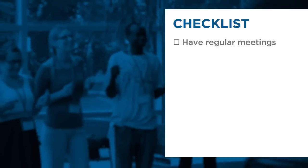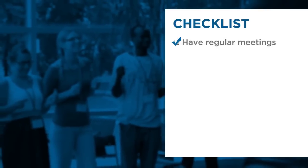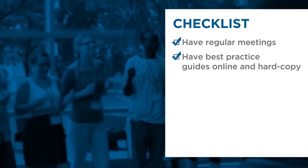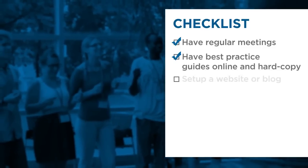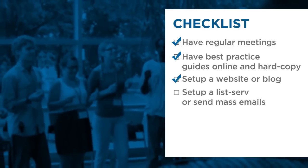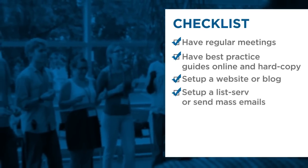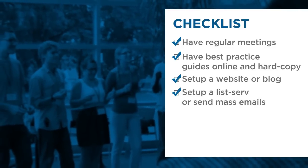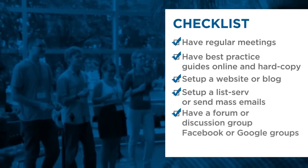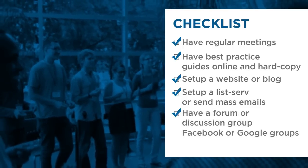The second crucial factor for training is making sure that your local committee communicates with each other. That means regular meetings, sometimes weekly, with separate meetings for subcommittees. Have best practice guides available through the web and in hard copy. Set up a website or blog in addition to a listserv or mass email where all members can receive or check notifications and news. Also have a forum or discussion group — some use Facebook or Google groups — to make it easier for members to discuss amongst themselves.